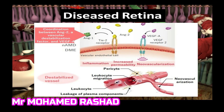In the diseased retina, due to any cause like neovascular AMD or diabetic macular edema, there is an increase in ischemia and hypoxia, which drives the production of two main molecules. The first is Angiopoietin-2, released in large amounts, blocking the signal of the TIE2 receptors and destabilizing the vascular endothelial cells. The second molecule is Vascular Endothelial Growth Factor, mainly type A, which stimulates the VEGF receptors, initiating signaling for increased permeability through weakening of the tight junctions of the endothelial cells and neovascularization.